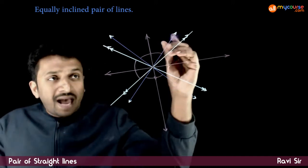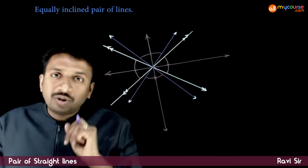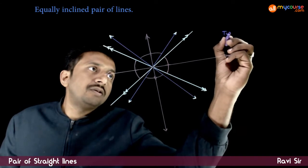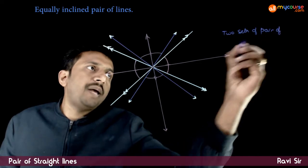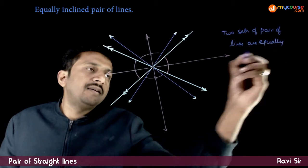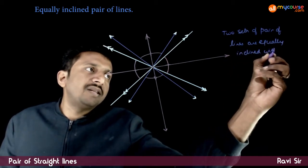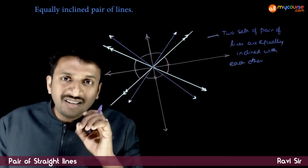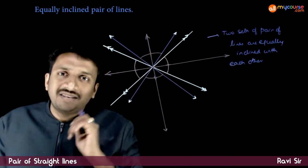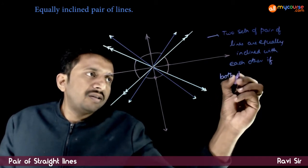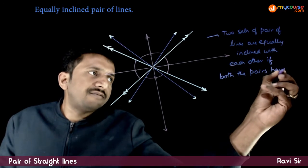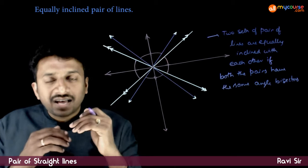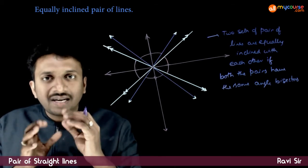Two sets of pair of lines. If you have two sets of pair of lines — that is pair of lines 1 and pair of lines 2 — these two pairs of lines are said to be equally inclined to each other if they have the same angle bisectors. If both the pairs have the same angle bisectors, then the two sets of pair of lines are said to be equally inclined.